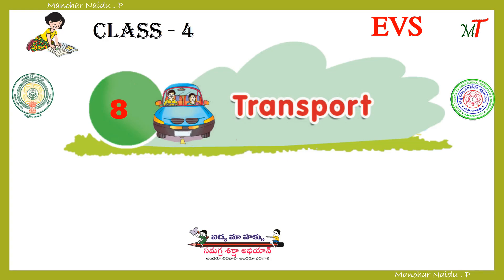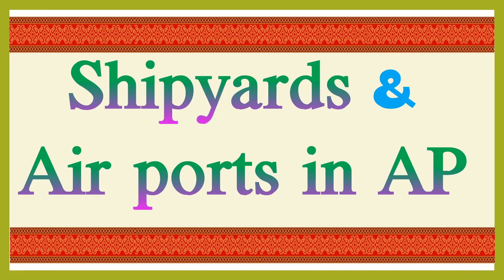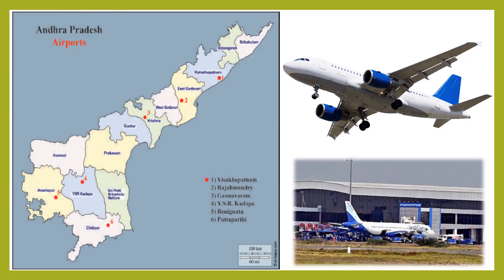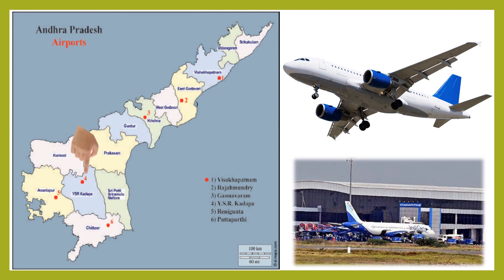Transport, shipyards and airports in AP. There are six main airports in our state. The first one is Visakhapatnam, and Rajamahendravaram in East Godavari. Gannavaram in Krishna district, Kadapa in Y.S.R. Kadapa district, Puttaparthi in Anantapur district, and Renigunta in Chittoor district.